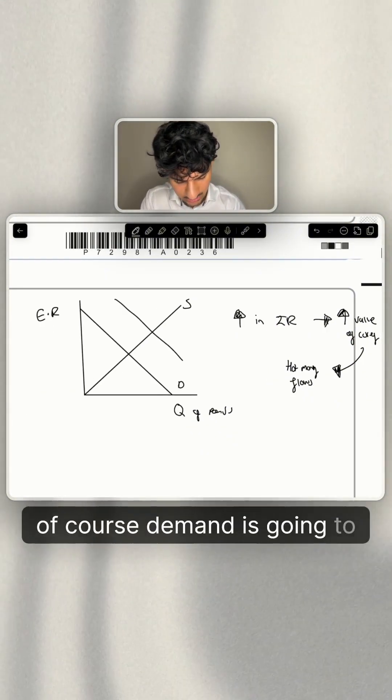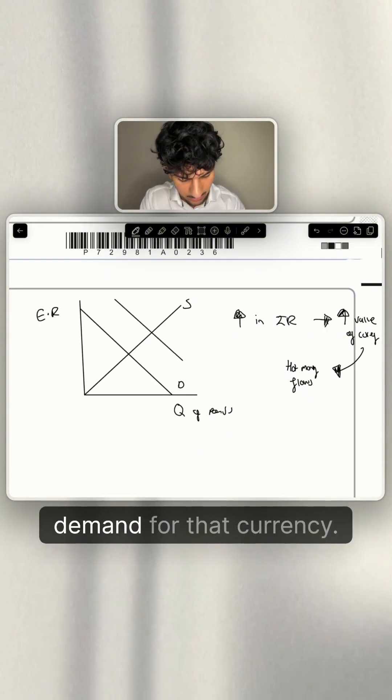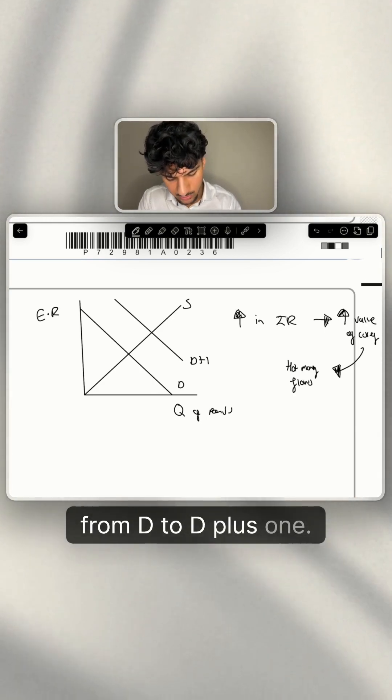If you look back at the currency diagram, of course, demand is going to shift out since high interest rates can lead to increased demand for that currency. So demand is going to shift from D to D plus one.